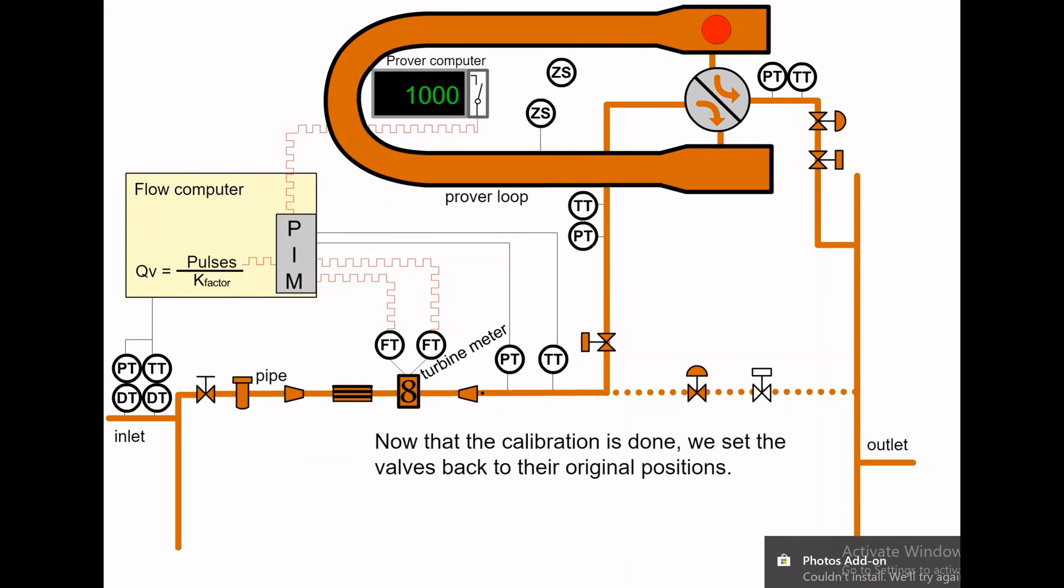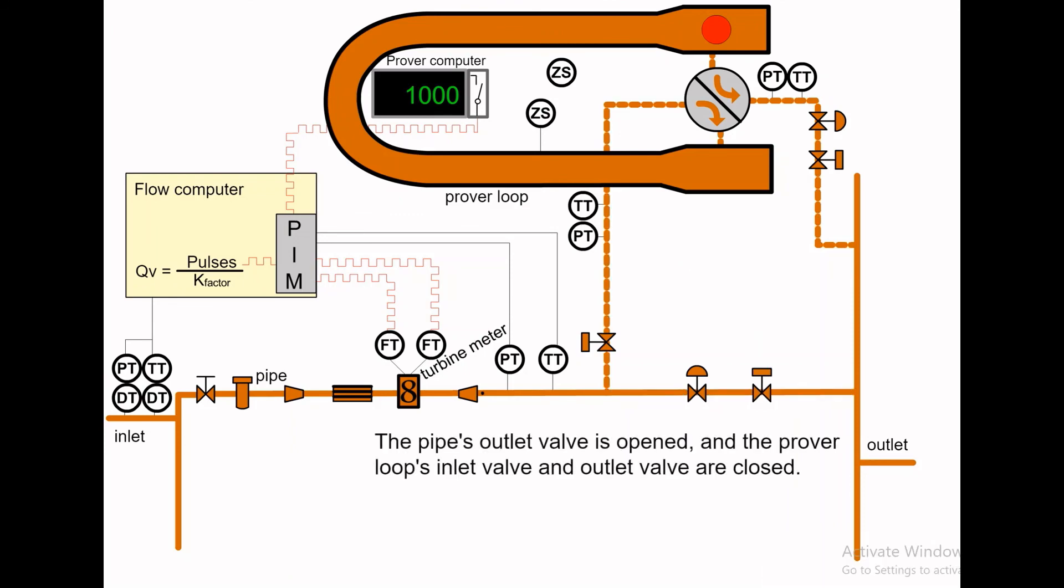Now that the calibration is done, we set the valves back to their original positions. First, we open the pipe's outlet valve, and then we close the prover loop's inlet valve and outlet valve.